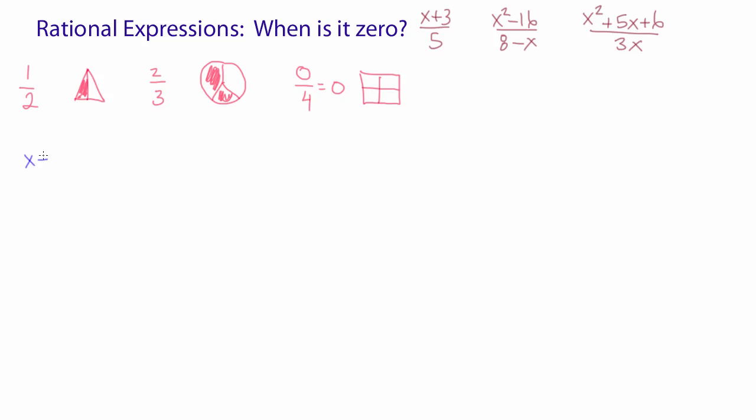So we'll take the first one and we want to know when is this expression zero. Not a problem. We look at the numerator. In this case, the numerator is x plus three. We set it to zero. We solve it. X equals negative three. This is our answer.